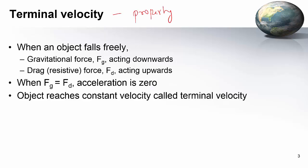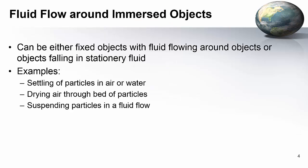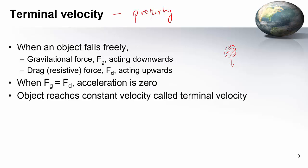So when an object freely falls, at some point, the gravitational force acting on it will become equal to the drag or the resistive force. When Fg equals Fd, that means the net force acting on the body is 0, F equals mA which equals 0.